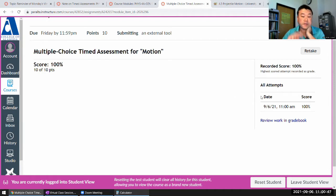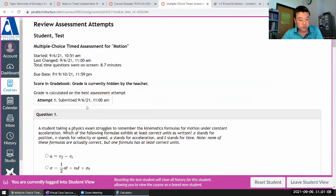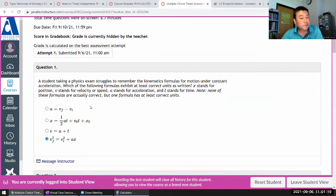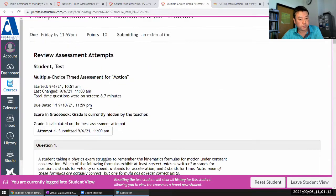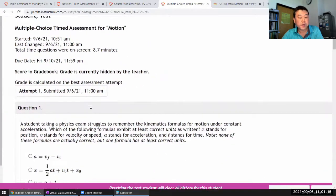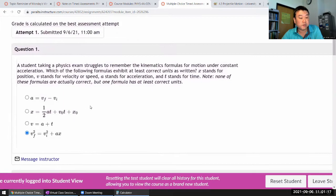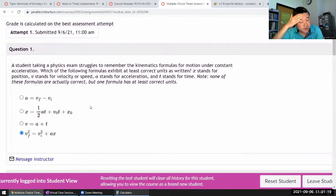So you do have, again, three total attempts. So if the score you get on the... And you will be able to see the score. I can't really block that. So you'll be able to see the score. If the score you get on the first attempt is what you wanted, then I would recommend that you not do retake right away. Review your work. So you can do review work in grade the book. You can see your attempt. Now the question won't tell you which or the system won't tell you which questions you got right and which questions you got wrong.